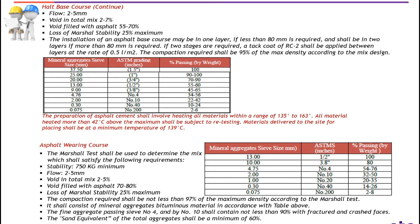Asphalt wearing course, also known as the top layer or hot mix. There are a number of checkpoints. Number one: the Marshall test shall be used to determine the mix, which shall satisfy the following requirements. Stability: 750 kg minimum. Number three: flow — 2 up to 5 mm. Void in total mix: 2 up to 5%. Void filled with asphalt: 70 up to 80%. Loss of Marshall stability: 25% maximum. The compaction required shall be not less than 97% of the maximum density according to the Marshall test.